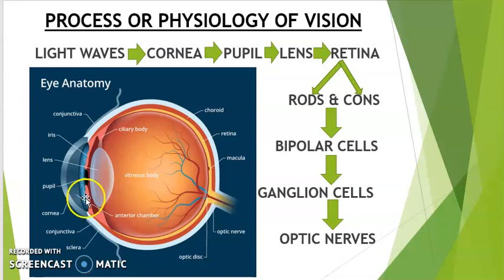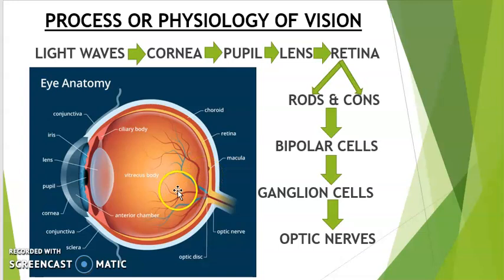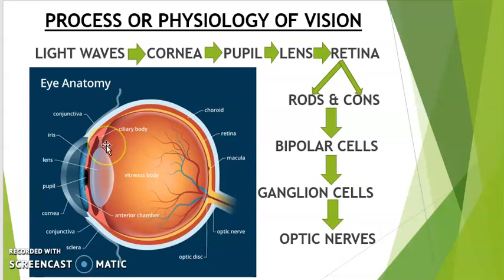Through the pupil, light enters the lens. The lens is biconvex and is also a converging lens — it focuses the image at a point. In a normal eye, the focus will be on the retina; if a person has vision problems, the focus will be either in front of or behind the retina. The lens is held in place by ciliary muscles. When looking at a far away object, less power is needed to converge light and the lens becomes flattened or thinner. When looking at a closer object, more power is needed and the lens becomes thicker.